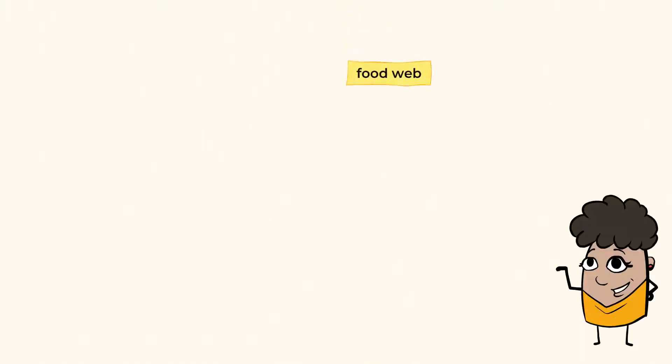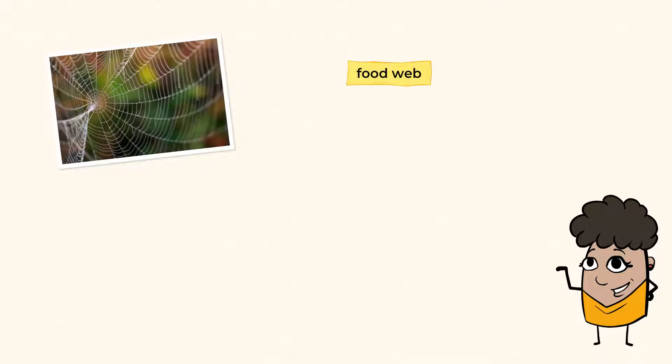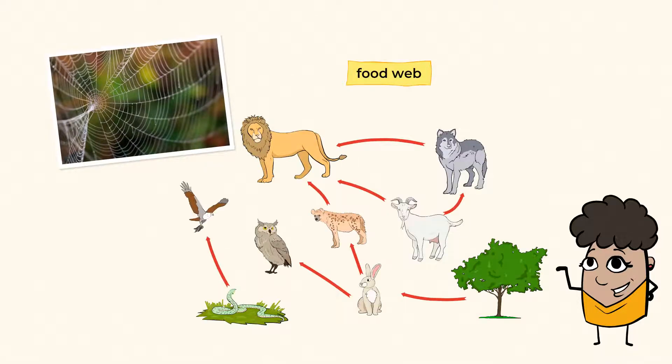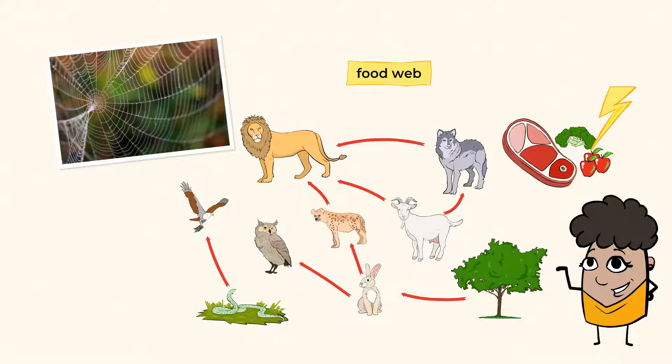A food web sounds like a spider web, and actually is very similar. In a food web, plants and animals are connected in many different ways. Nutrients and energy are passed from one living thing to another.